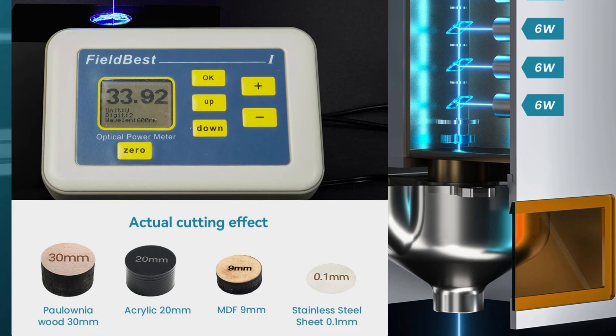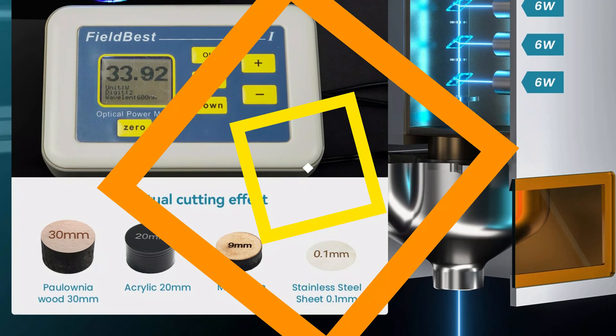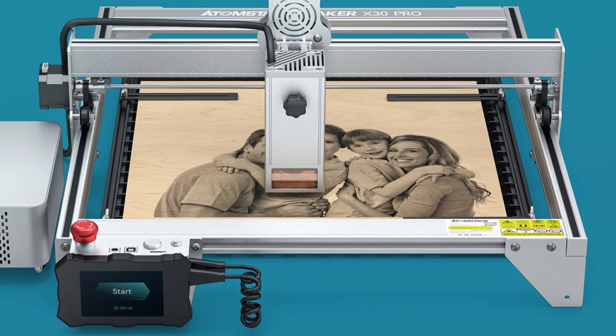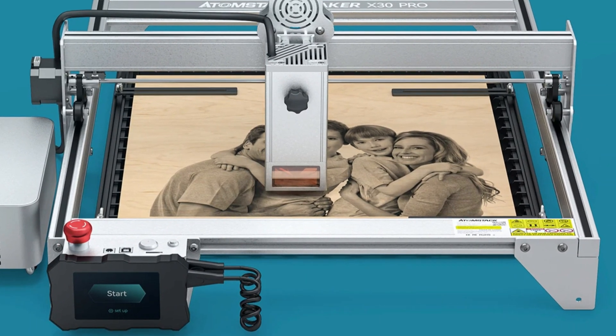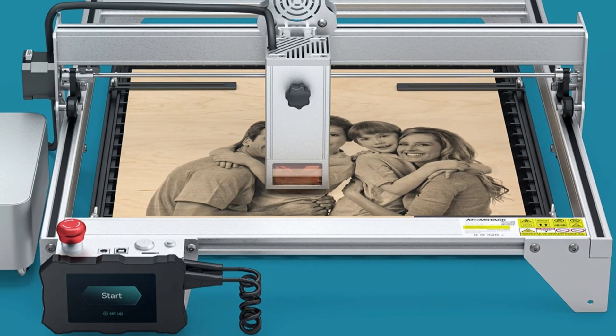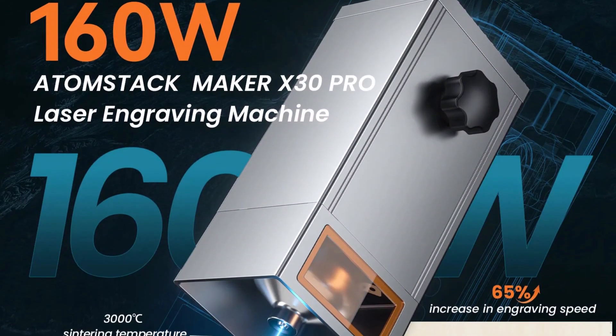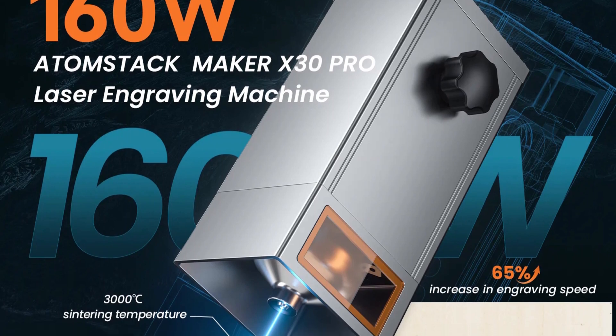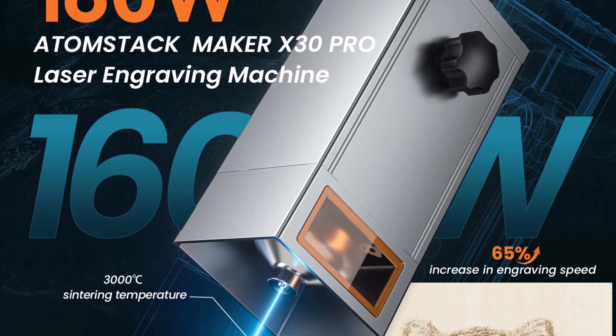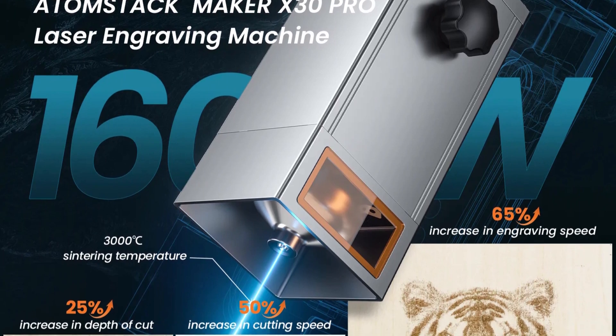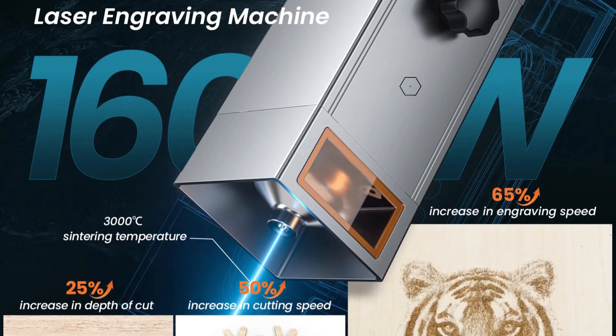The X30 Pro also features an eye protection design, with a panoramic filter glass protective cover, filtering out 97% of ultraviolet light. The machine's all-aluminum alloy anodized structure ensures durability and simplifies installation. Its upgraded high-performance fixed focus laser offers precise engraving and high-energy cutting without manual focus adjustments. The X30 Pro is compatible with popular engraving software and supports various file formats.